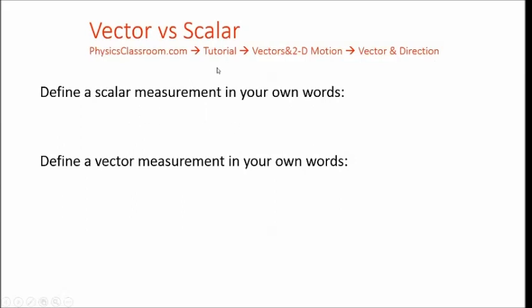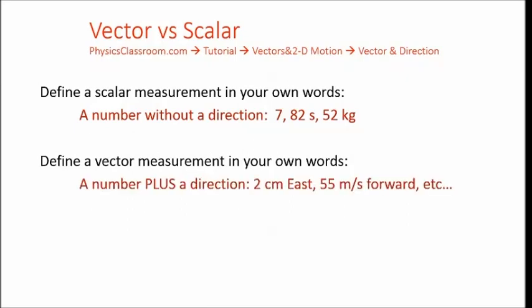Going back to what we already know, scalars are just a number without a direction. Seconds are a scalar, 52 kilograms is a scalar, number seven is a scalar. Vector measurements have a direction to them: two centimeters east, 55 meters per second forward, two miles up. Vectors have this direction to them.